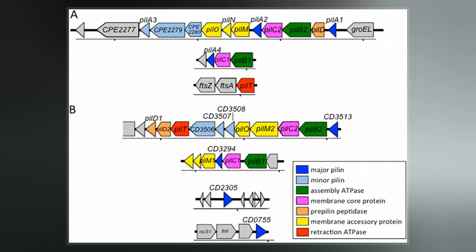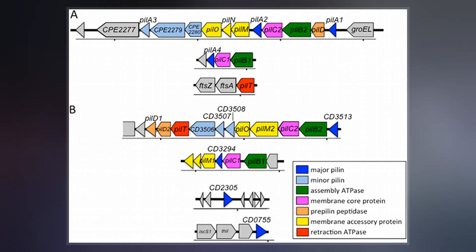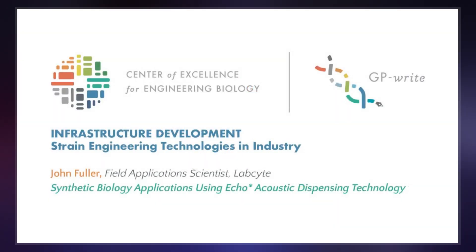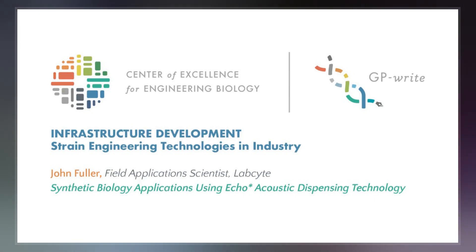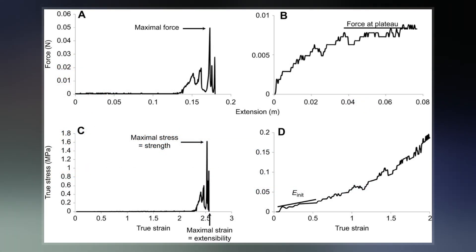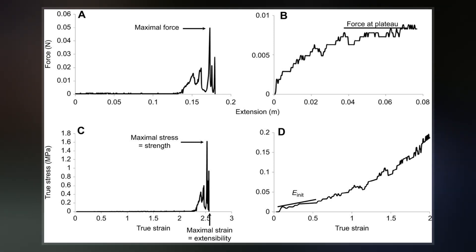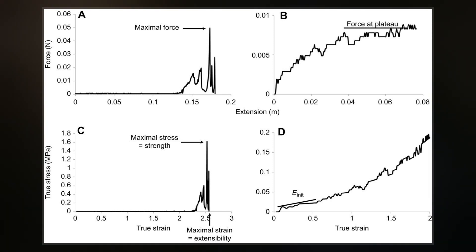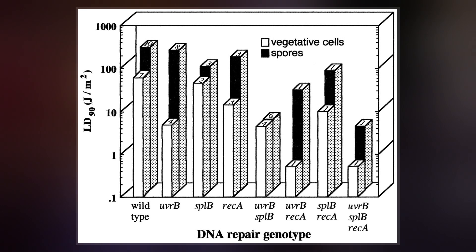Strains are also commonly referred to within virology, botany, and with rodents used in experimental studies. A strain is a genetic variant or subtype of a microorganism. For example, a flu strain is a certain biological form of the influenza or flu virus. These flu strains are characterized by their differing isoforms of surface proteins.